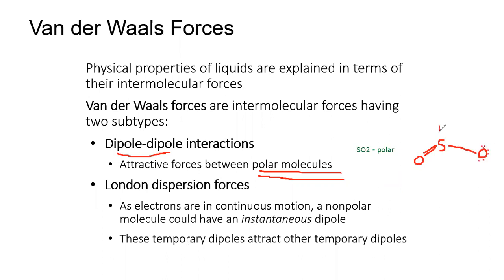On SO2, this is the positive end and this is the negative end on the oxygen side. You have a dipole moment in the molecule, and that's why it's a polar molecule. The negative end of one molecule is attracted to the positive end of another, and this is what holds the molecules together. So if it's a polar molecule, it has dipole-dipole interactions.